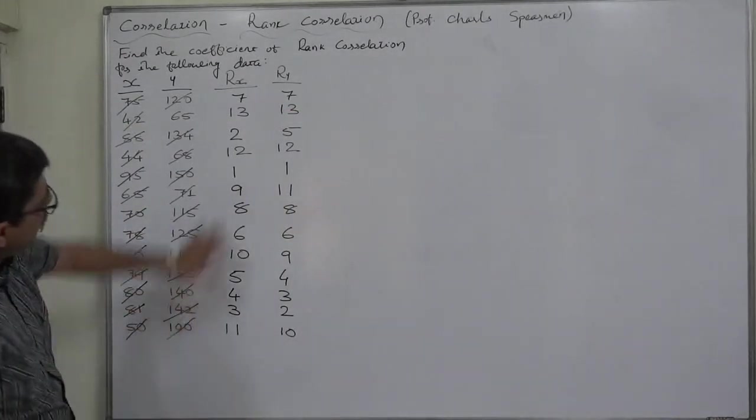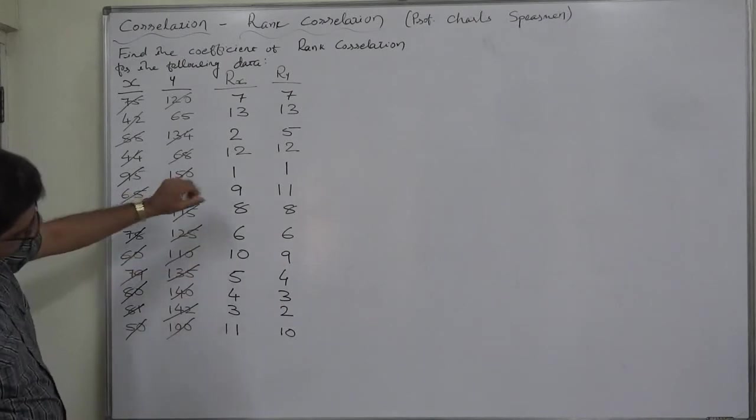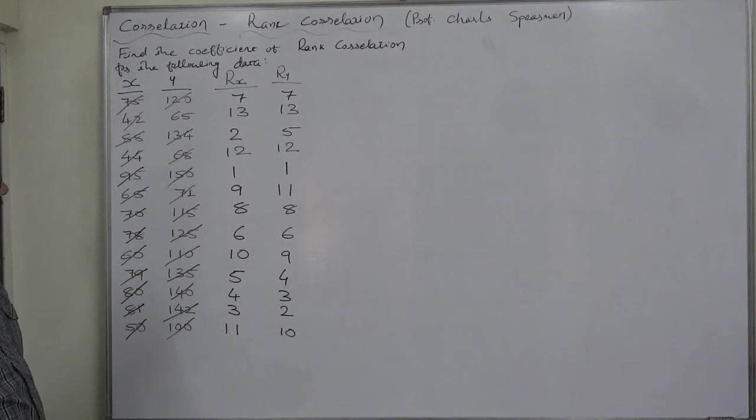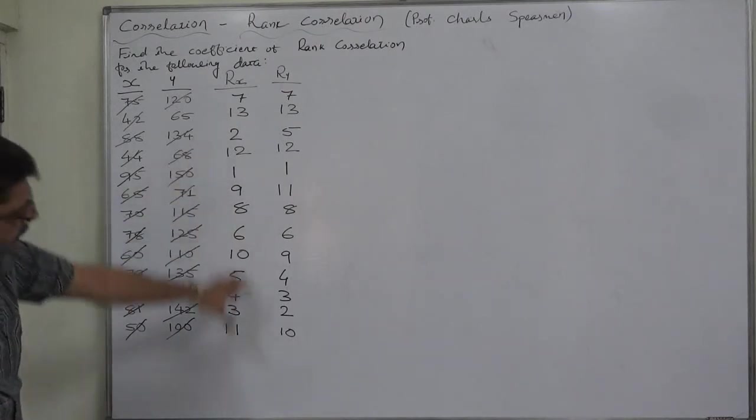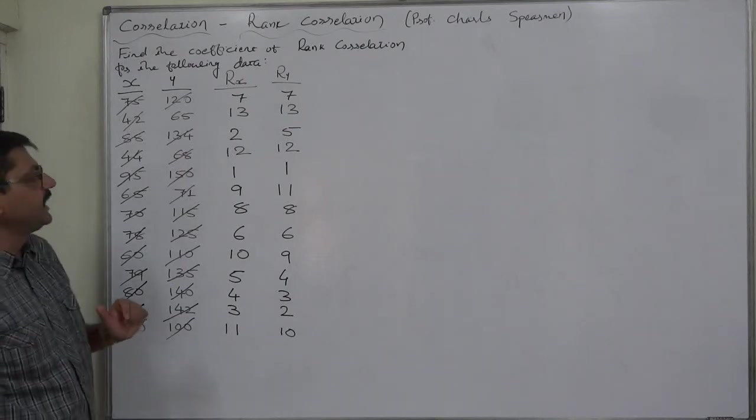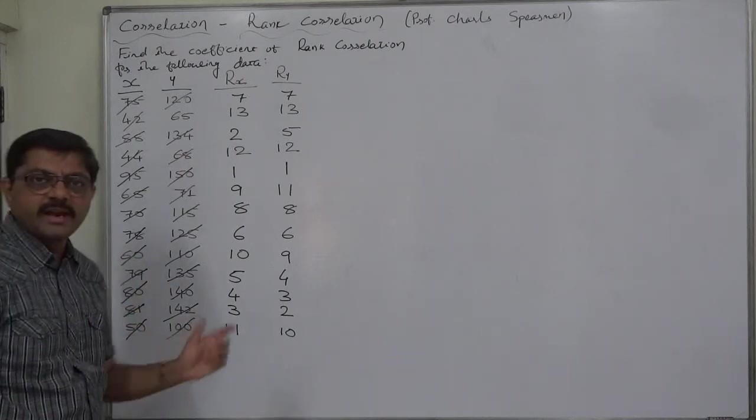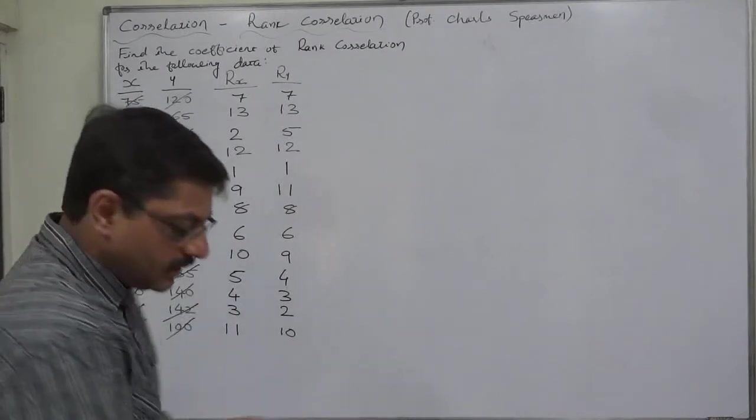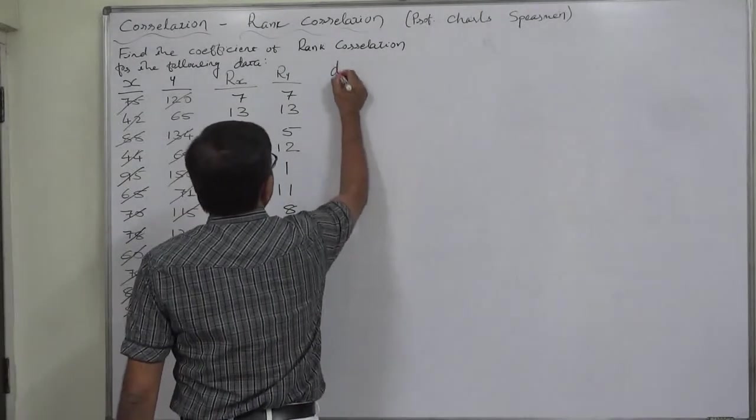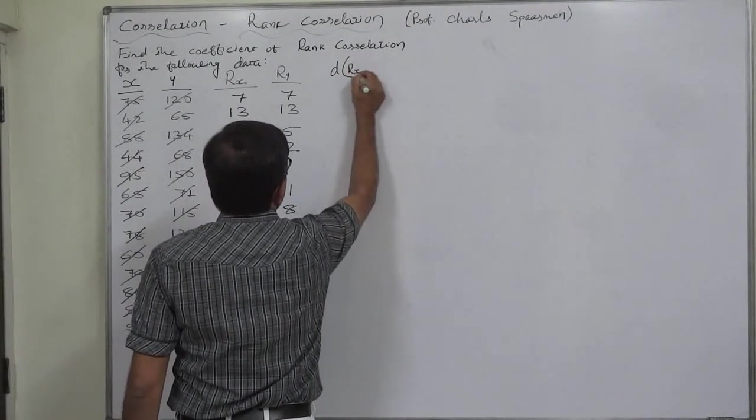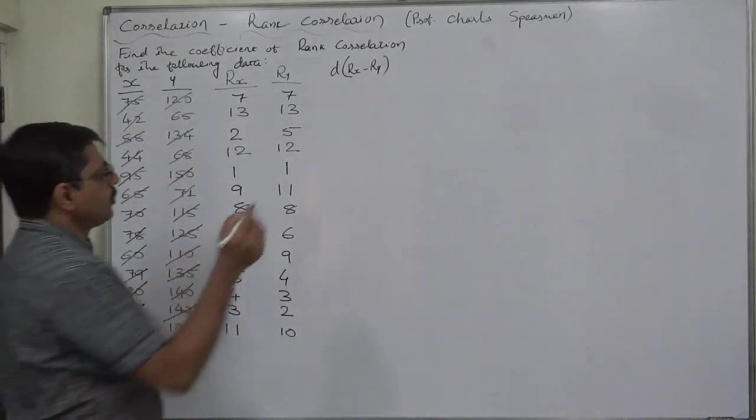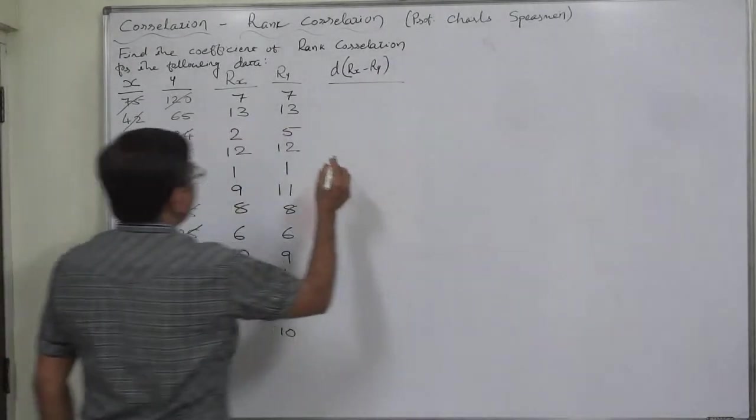See, more or less same or nearby ranks are there. So, just on the basis of this look of the data, we can say that there is very high correlation or very high rank correlation between the two phenomena. But let's calculate D for deviations Rx minus Ry or Ry minus Rx. Doesn't make any difference because ultimately we are going to take the square value.